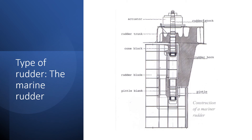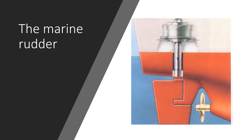The marina rudder is used on large ships like container ships, bulk carriers, tankers, and passenger ships. The rudder horn is integrated in the ship's construction, and the marina rudder is attached to the stern post with the ability to rotate, resulting in a strong and robust rudder. Disadvantages are a large risk of cavitation at the suspension points and that the cast construction is more expensive. The parts include the rudder actuator, rudder stock, rudder trunk, cone block, rudder horn, rudder blade, pintle block, and pintle — around which the rudder swivels.